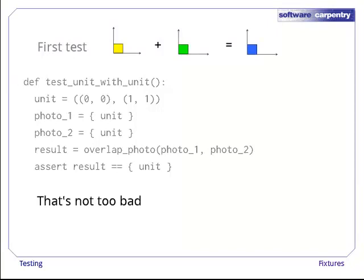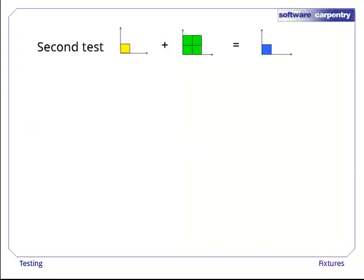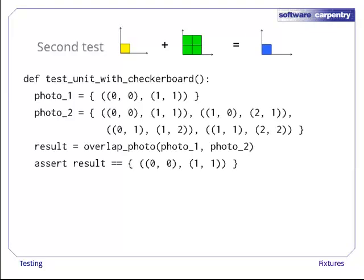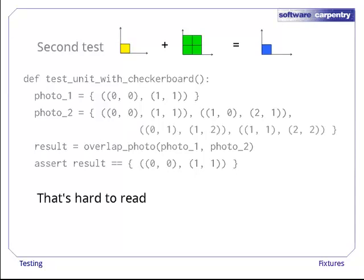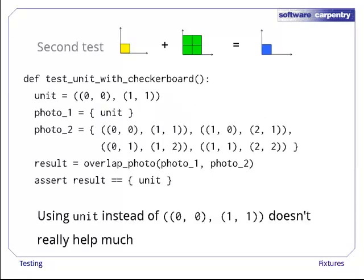Okay, let's write a second test: the unit square against a checkerboard pattern containing four squares. Again, the output should contain only the unit square. Again it's only six lines of code, but those six lines are harder to read. We could introduce a variable called unit so that we don't write down the unit square's coordinates twice, but it doesn't really help much.